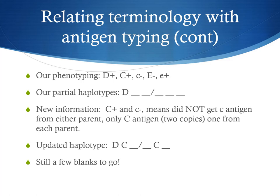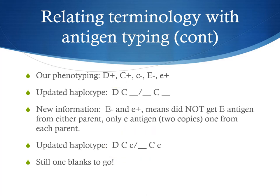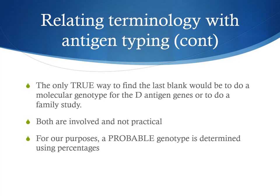Again, the term 'Rh phenotype' is misleading. When you hear this term, the person means D, big C, little c, big E, little e antigens. A full Rh phenotype would include over 50 antigens and is rarely done. Anti-little e is a rare antiserum; if the patient or donor red cells test as e-negative, the e antigen will be assumed as positive, although monoclonal anti-e is now more readily available. Here's an example of what someone's Rh phenotype might look like: with anti-D there was a 4+ reaction, anti-big C 3+, anti-little c no reaction, anti-big E no reaction, and anti-little e a 3+ reaction.